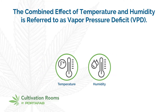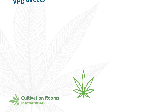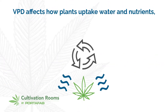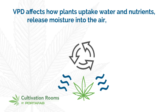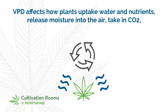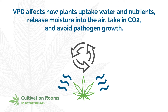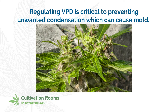The combined effect of temperature and humidity is referred to as vapor pressure deficit or VPD. VPD affects how plants uptake water and nutrients, release moisture into the air, take in CO2, and avoid pathogen growth. Regulating VPD is critical to preventing unwanted condensation which can cause mold.